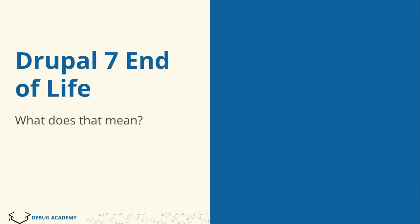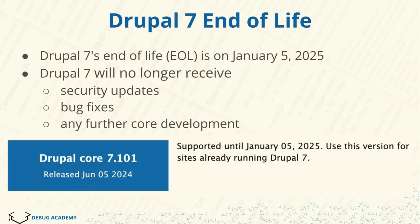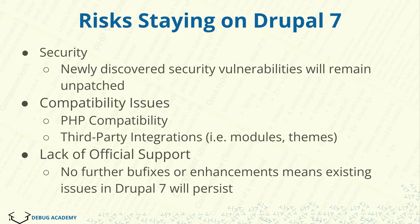I'm going to start by discussing what Drupal 7's end-of-life means. Drupal 7's end-of-life is coming up on January 5th, 2025. This means Drupal 7 Core will no longer receive security updates, bug fixes, enhancements, or any further core development. The first major risk is security — newly discovered vulnerabilities will remain unpatched and your site can be at risk of being hacked. You may also face compatibility issues because newer versions of PHP may not be compatible with Drupal 7, and existing bugs in core are likely to persist.